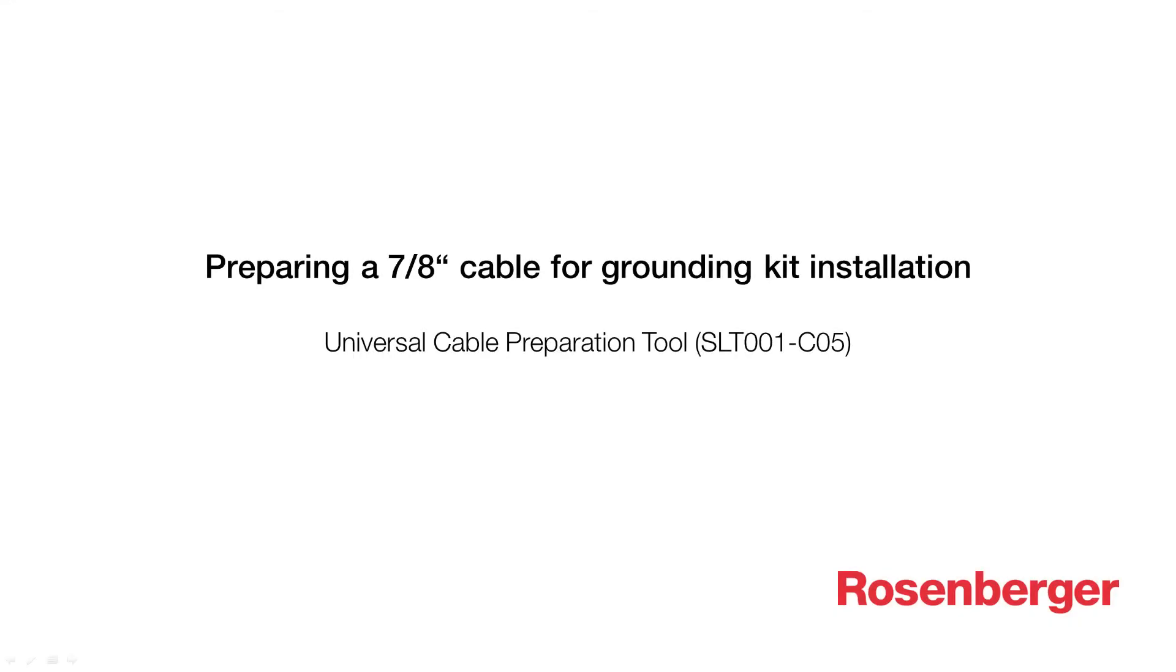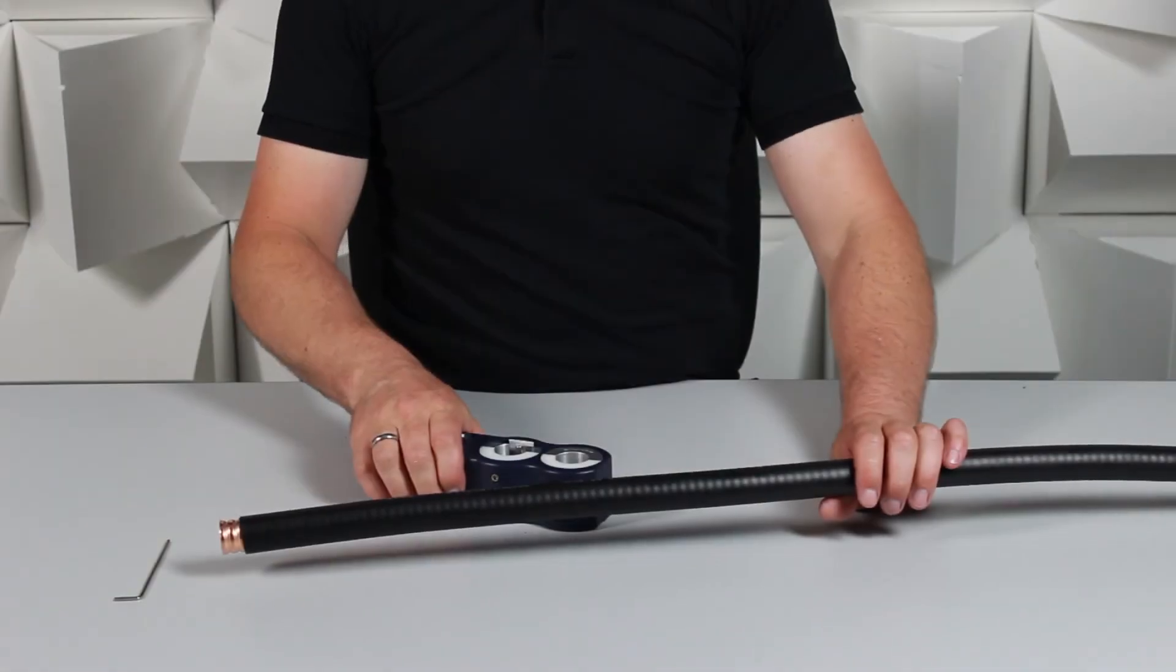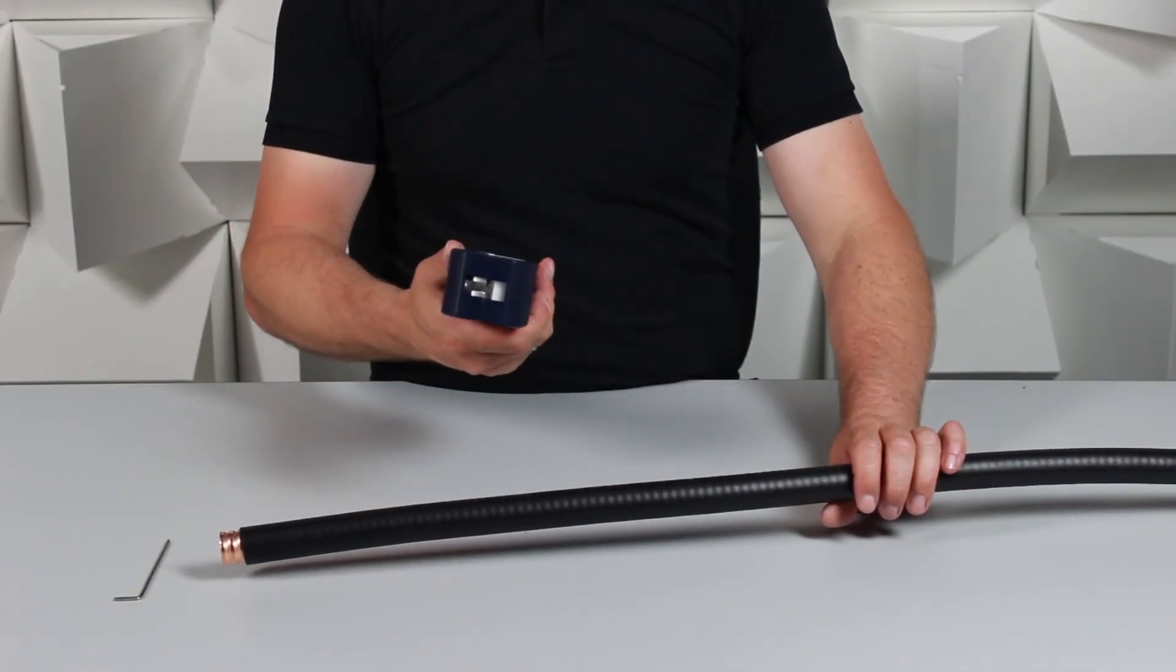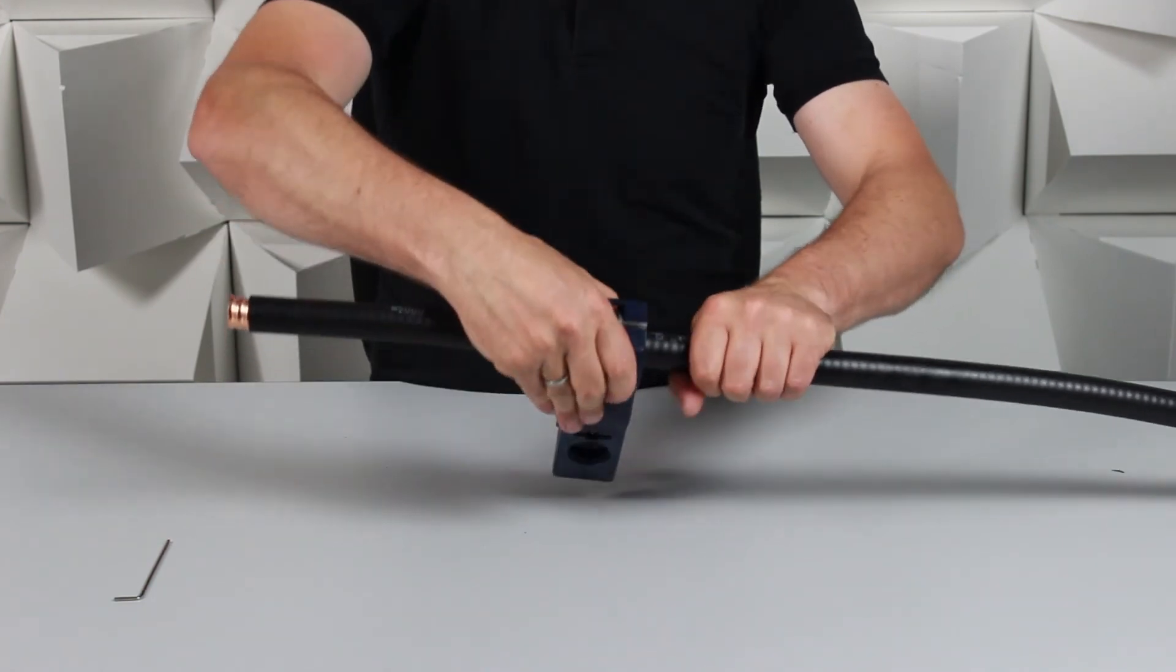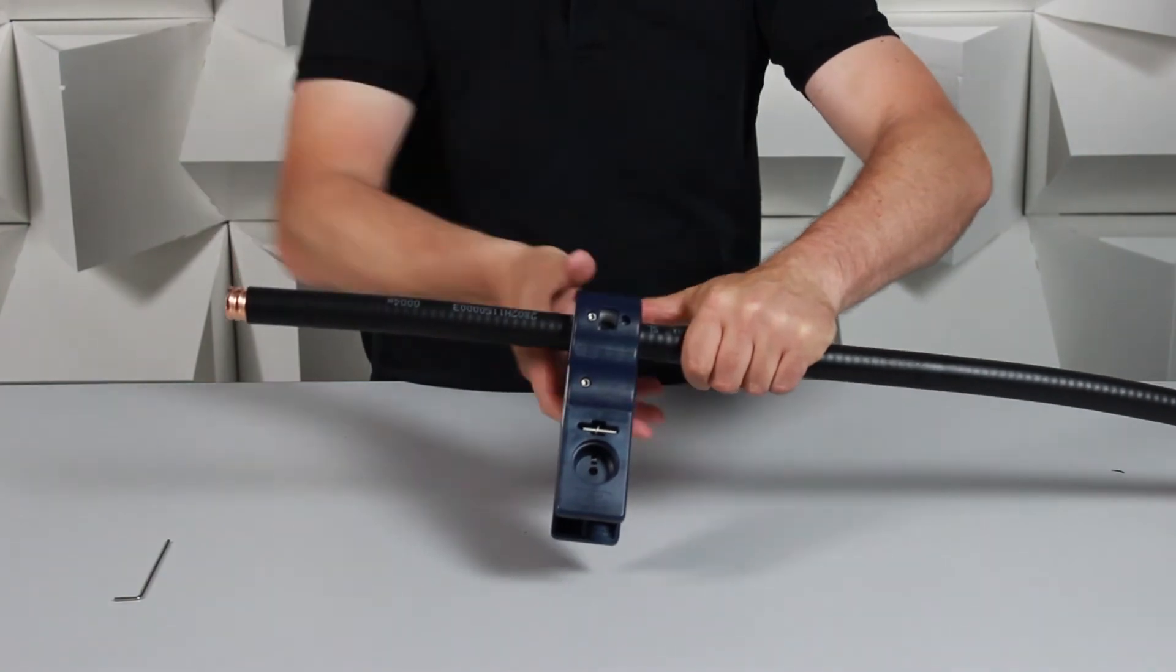And in our final example, we'd like to show you how to prepare a 7/8 cable for grounding kit installation. The all-in-one tool is also the perfect preparation method for our grounding kits. We apply this into the middle of the cable where we need it, like so.